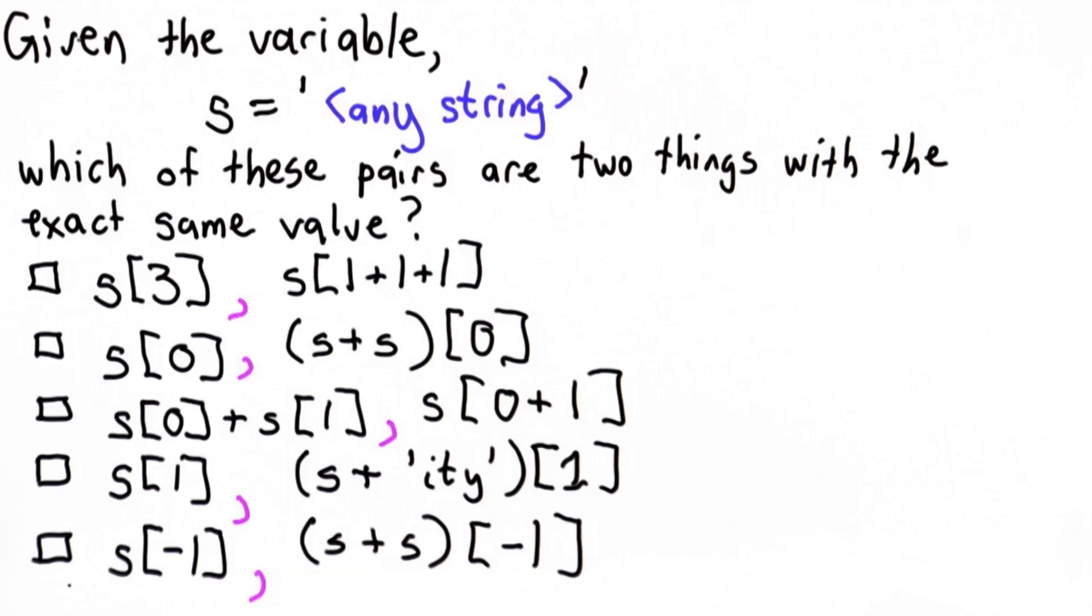So for this question, you should check all the boxes where the two items in the pair have exactly the same value, no matter what value s has, as long as s is a valid string.